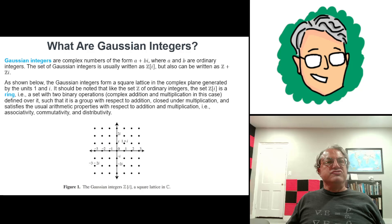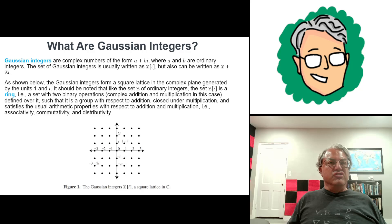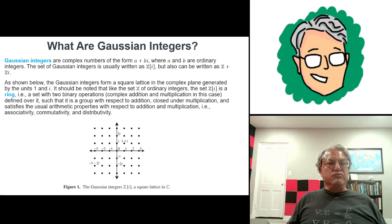One thing you should note about the Gaussian integers is they have some very useful properties. You can think of them kind of like the ordinary integers are for the real numbers. If you know anything about ring theory, the ordinary integers form what's called a ring. All that means is there are two binary operations on the integers — addition and multiplication — and they satisfy the usual properties. It's a group with respect to addition, in fact an abelian group, commutative with respect to addition. It's also closed with respect to multiplication, associative, commutative, and distributive with respect to addition and multiplication. Those are just the usual properties — that's what makes it a ring.